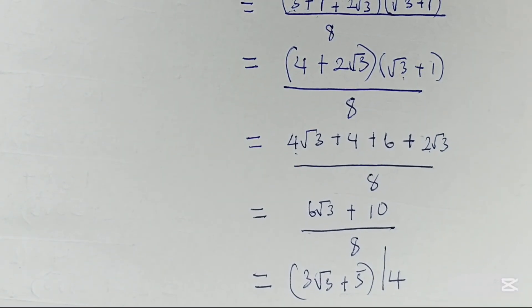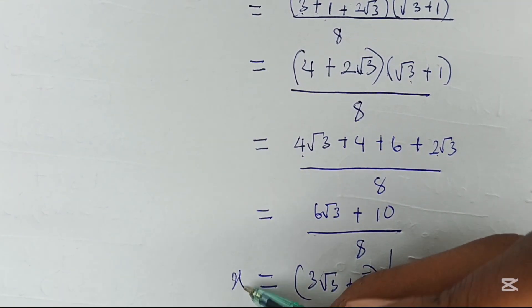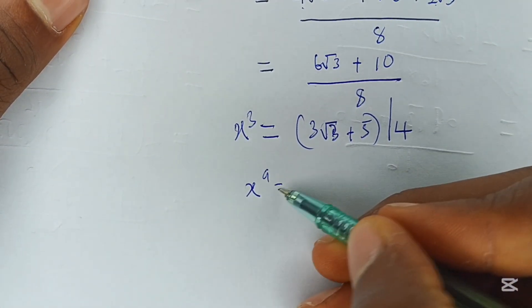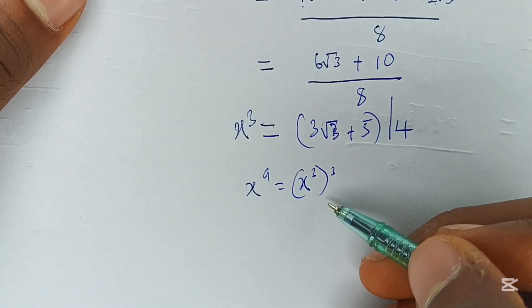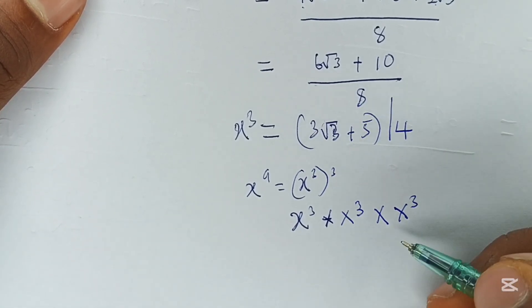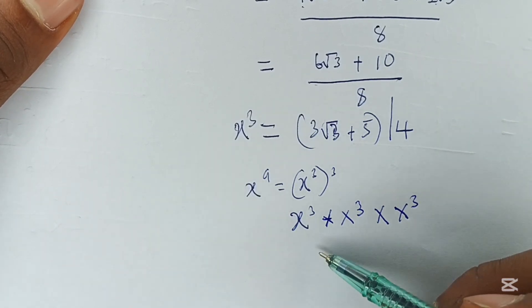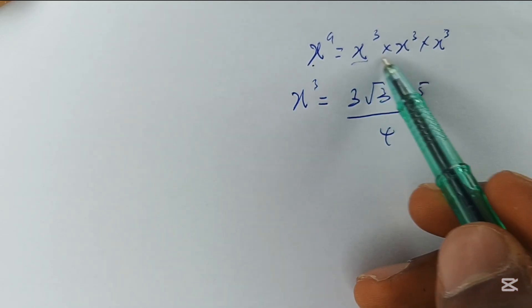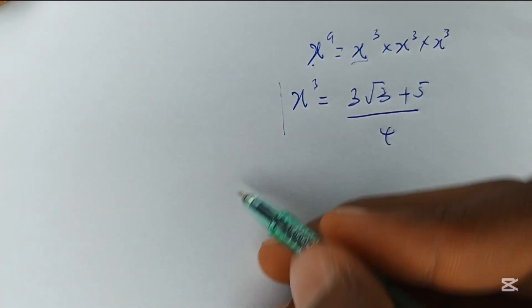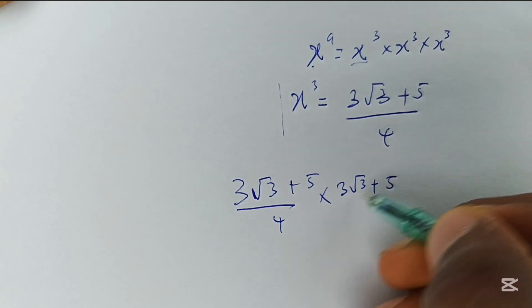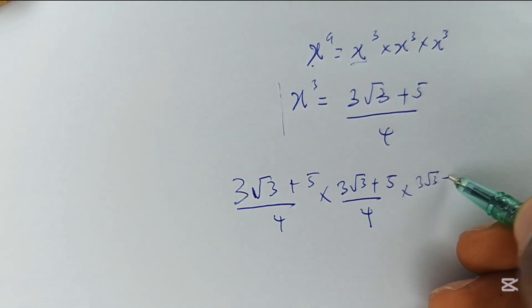So x³ = (3√3 + 5)/4. Now let's find x⁹. Recall that x⁹ = (x³)³, meaning we multiply x³ by itself three times. So we compute (3√3 + 5)/4 × (3√3 + 5)/4 × (3√3 + 5)/4.